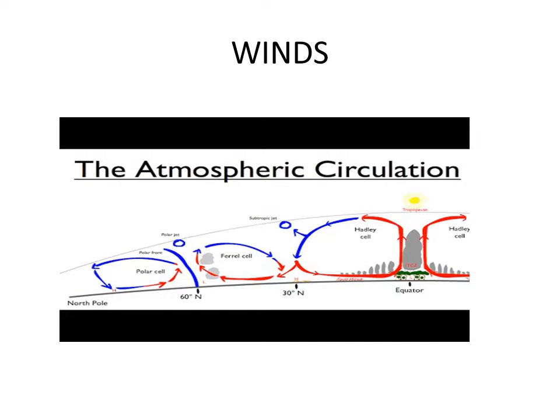Wind currents are generated due to uneven heating of the Earth. Winds are caused by the movement of air from a region of high pressure to a region of low pressure. The speed of the wind depends on the differences in pressure. The equator is a region of low pressure and the poles are regions of high pressure. Warm air at the equator constantly rises creating low pressure, while cold dense air at the north and south poles constantly sinks towards the equator.